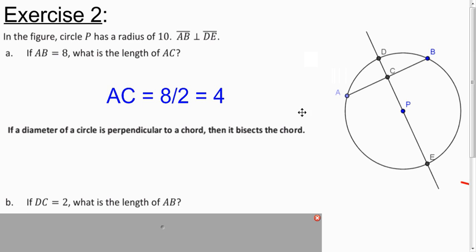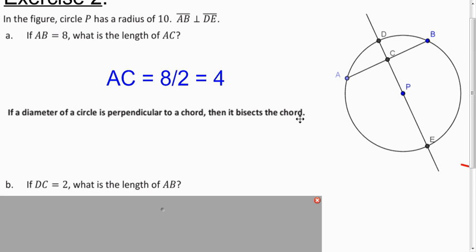Okay, what if DC is 2? So same diagram, different numbers. If DC is 2, what's the length of AB? Well, it's not directly clear what that relationship is. But what else can we deduce in this picture based on that information? Let's see, let's draw on our radii. That might be helpful. So we can draw a radius there. We can draw a radius there. And we know that they both have a length of 10.